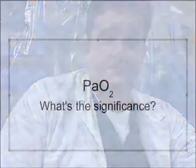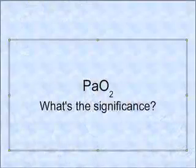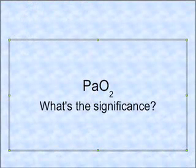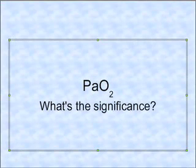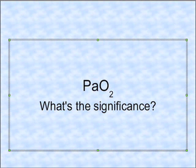Welcome to the last video in the series on clinical application of arterial blood gases — last but not least, oxygenation. One of the most important measured parameters on the blood gas is the PaO2. What is PaO2? How is it significant? And finally, what are the factors that control PaO2?